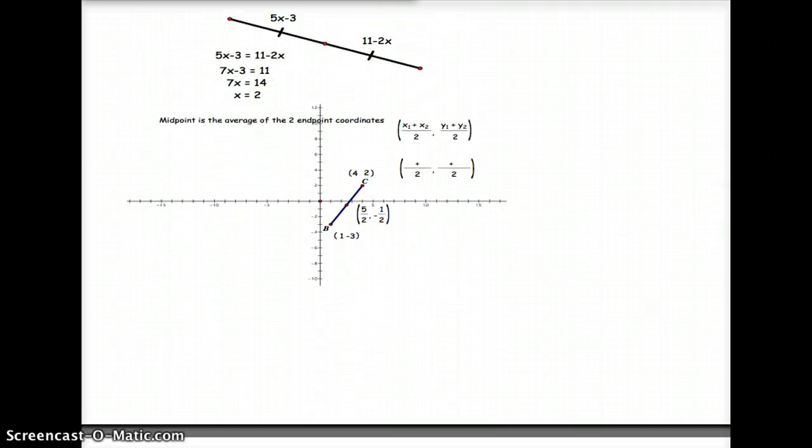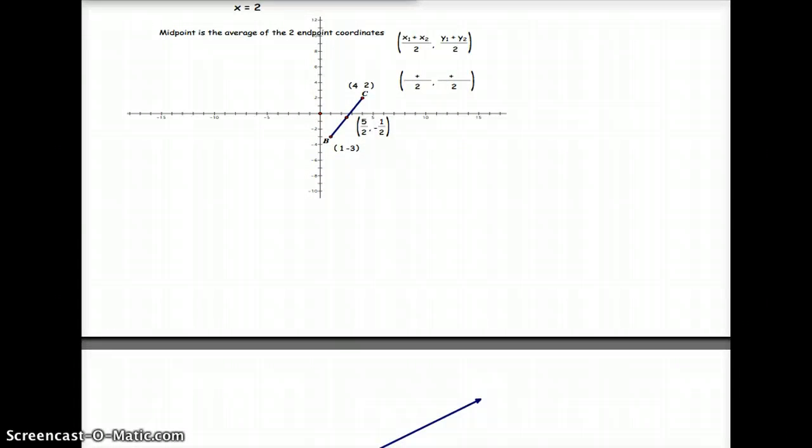Now let's start talking about some midpoint. Midpoint is the average of the two end point coordinates. Again, average, if you remember, is you take the number of things that you have to average, add them together and divide by how many you have.